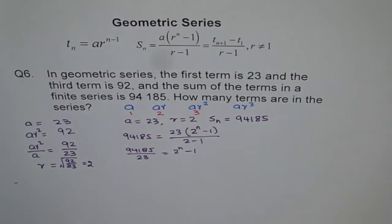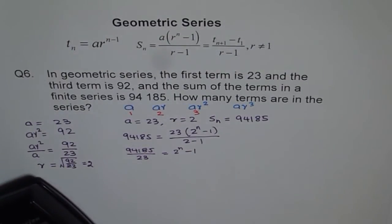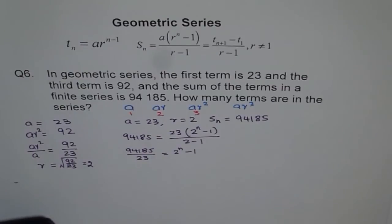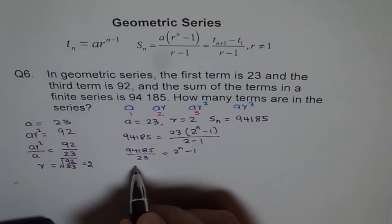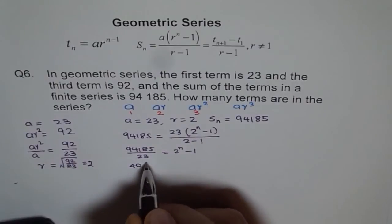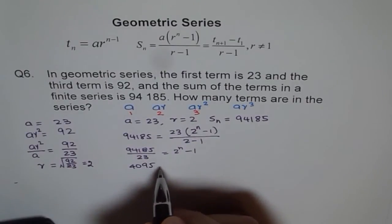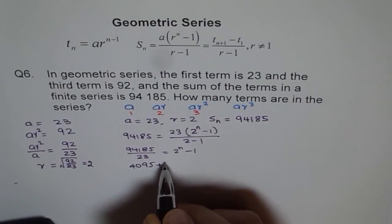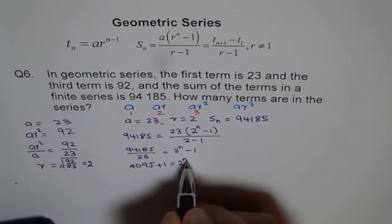Let's compute that: 94,185 divided by 23 equals 4,095. Bringing the 1 to the other side — adding 1 — gives us 4,095 plus 1 equals 2^n, so 2^n equals 4,096.